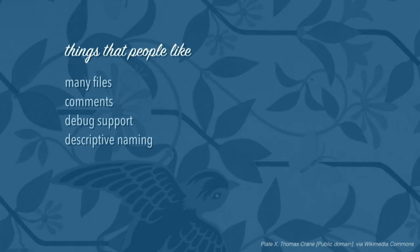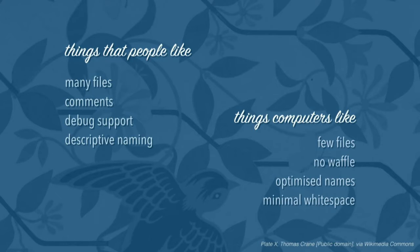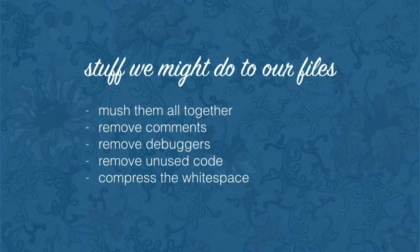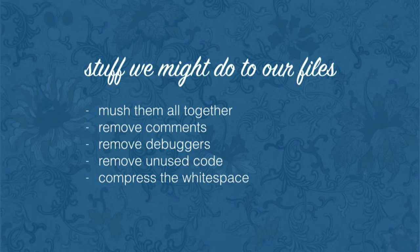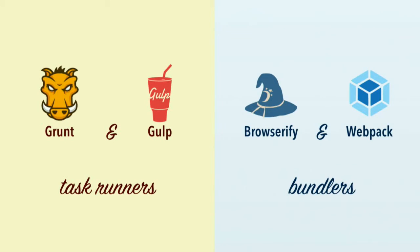People like many files — we like to split up our code into pieces that make sense as standalone files. We like comments to explain what they do, debug support like console logs and debugger points, and descriptive naming. However, computers prefer as few files as possible, no comments — take it all out, only the stuff needed to run. So some of the things we want to do when taking files from dev to production: combine them to reduce the number of files delivered to the browser, remove comments and debug statements, remove unused code if possible, and compress all whitespace.